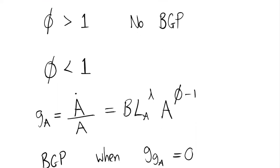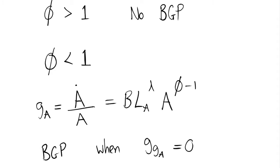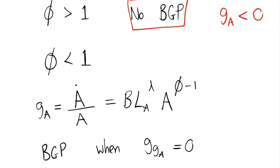We could also consider φ greater than 1, but in this case we don't really have a balanced growth path we'd want to use. The only balanced growth path we'd find here requires a negative growth rate of the technology stock — g_A less than zero — and that isn't something we want to consider. We tend to want a balanced growth path with positive growth as an accurate characterisation of developed economies, so we're not really going to pursue this case.